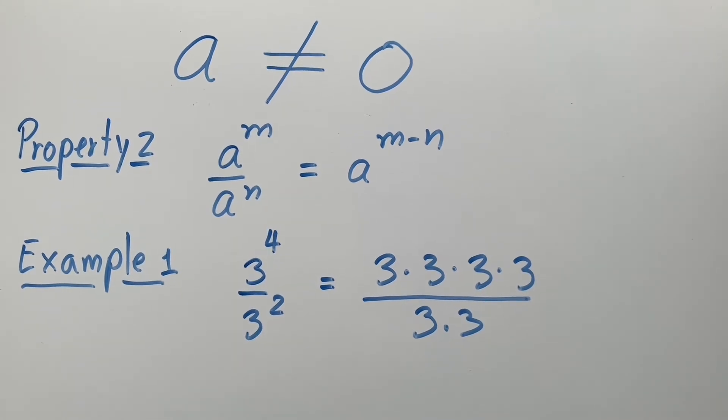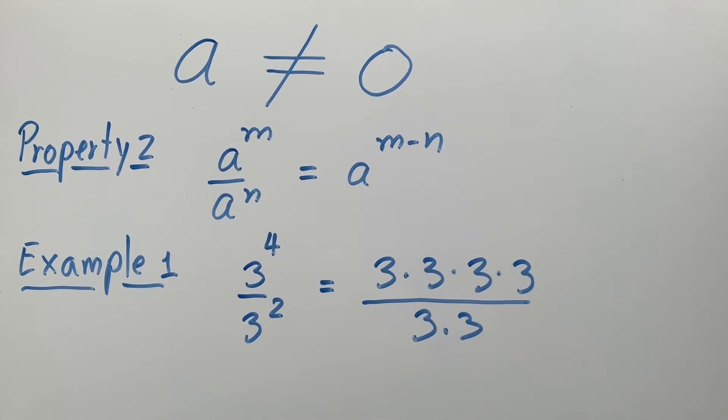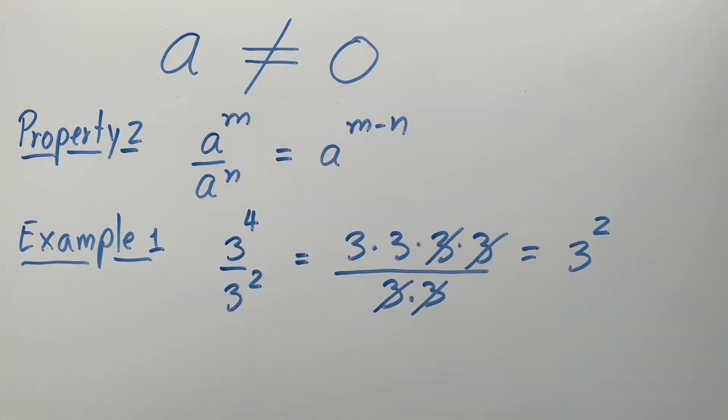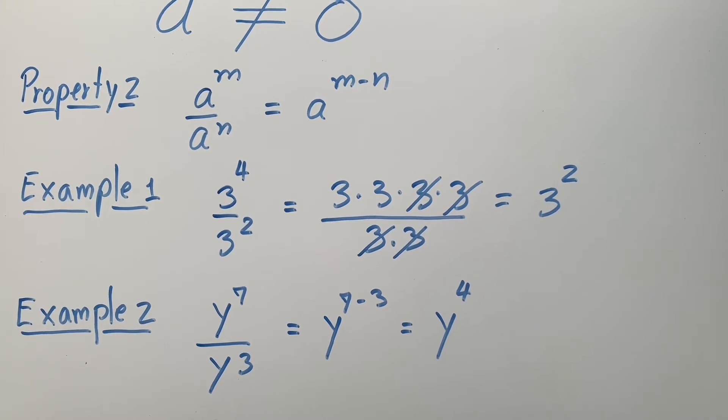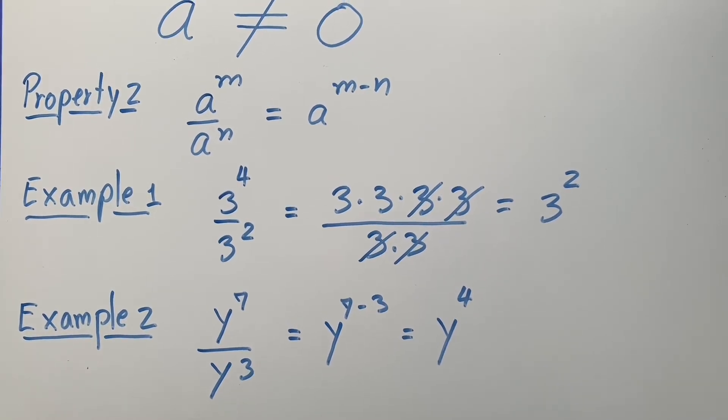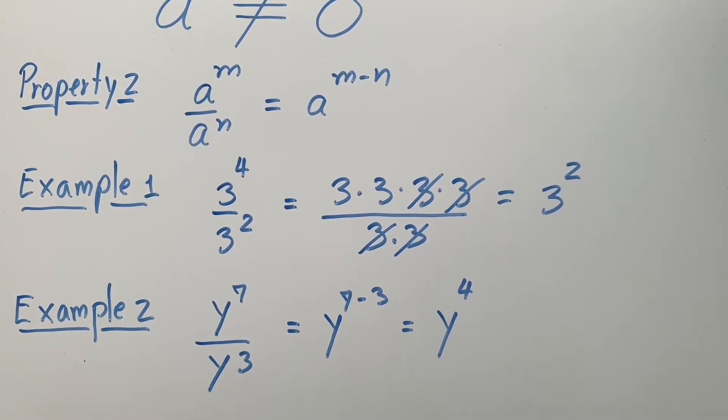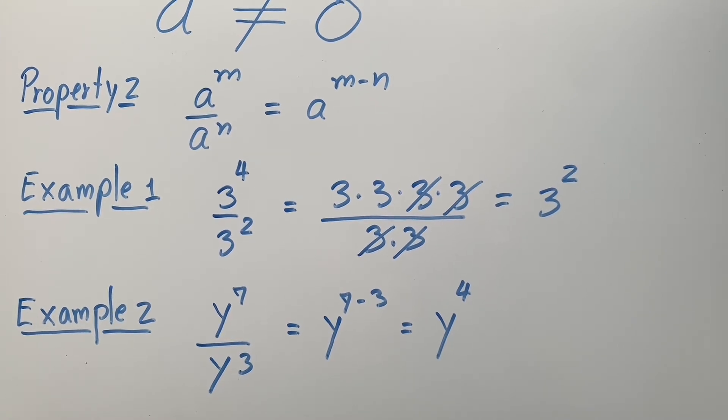3 to the 4th power divided by 3 squared equals 3 squared. Example 2: y to the 7th power divided by y cubed equals y to the 4th power.